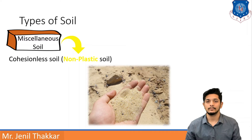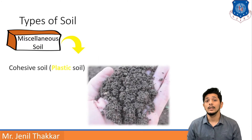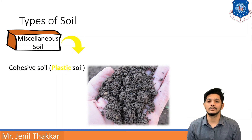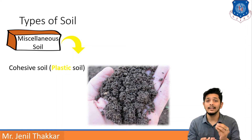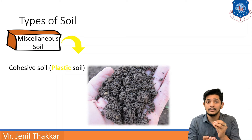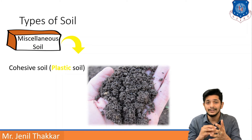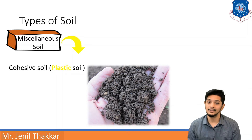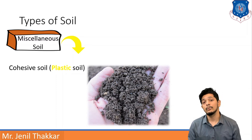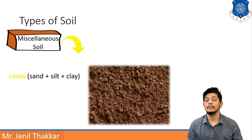The second type is cohesive soil, also called plastic soil. In the picture there is clay, where different particles are joined or clogged together. Due to this we say it is a cohesive or plastic soil — it will have some plasticity property.